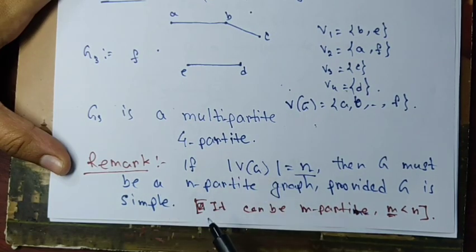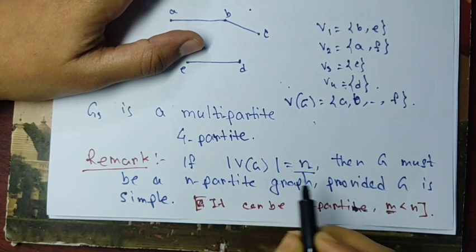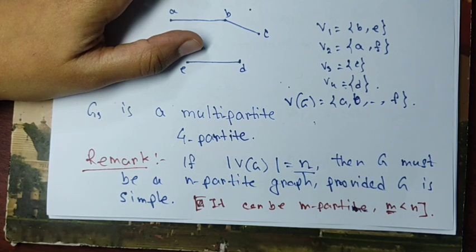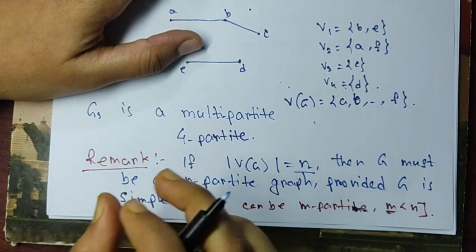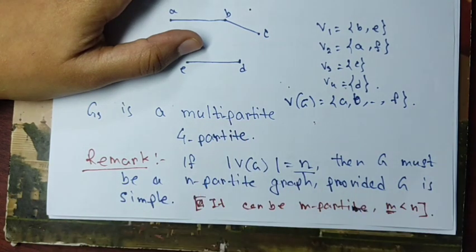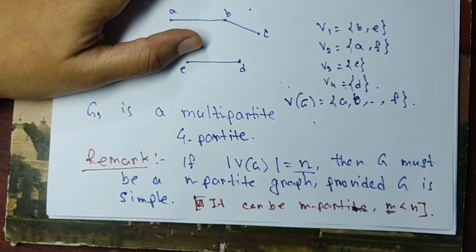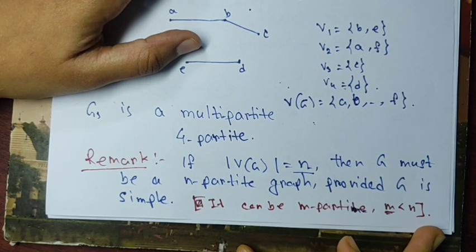We can justify this by considering the partition where each vertex forms its own singleton set. If the vertex set has n vertices v1, v2, ..., vn, we take each singleton {vi} as a part. Since the graph is simple (no loops), no vertex is adjacent to itself, so no two vertices within any part are adjacent. Therefore any simple graph with n vertices is always an n-partite graph.